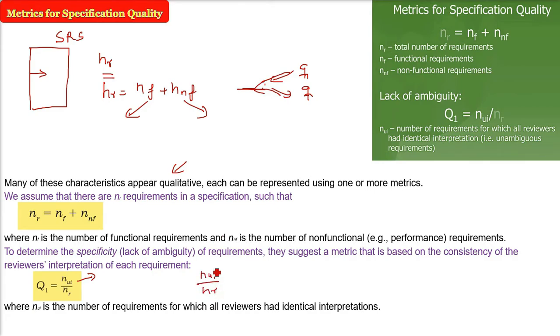So, nui by nr, this is the number of requirements all have same interpretation. And nr, you already know, nf plus nnf. So, closer the value of this Q1, if it is 1, closer to 1, then the ambiguity in this specification is less. So, this is how the metric can be computed.